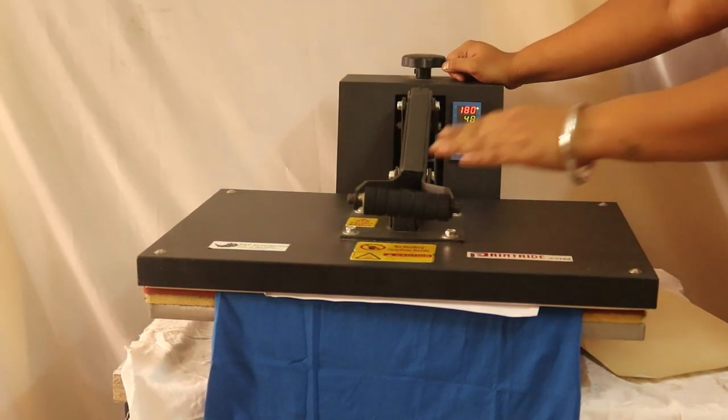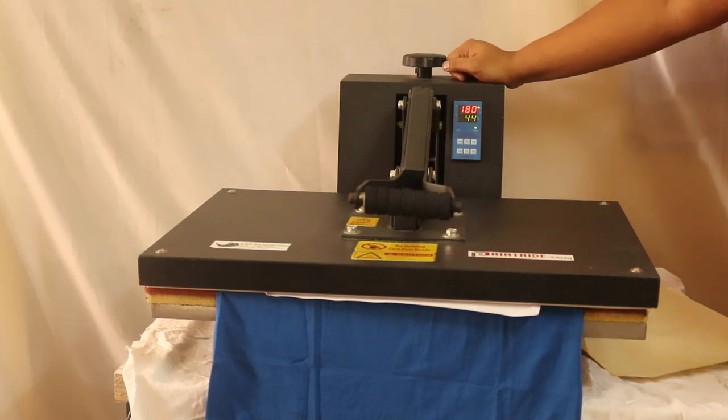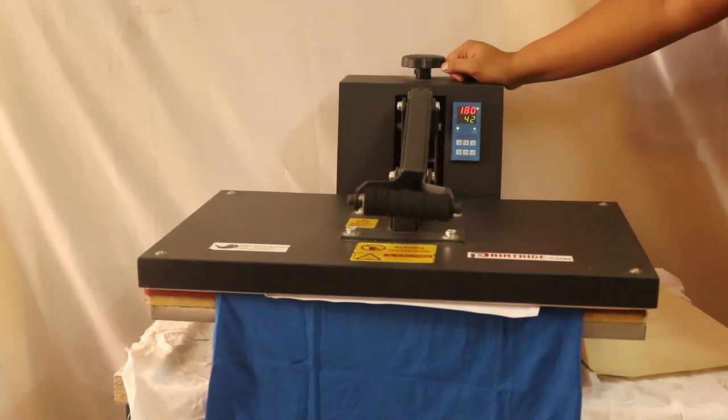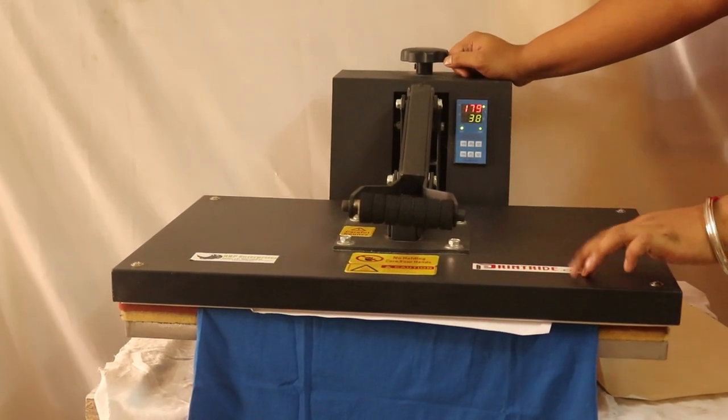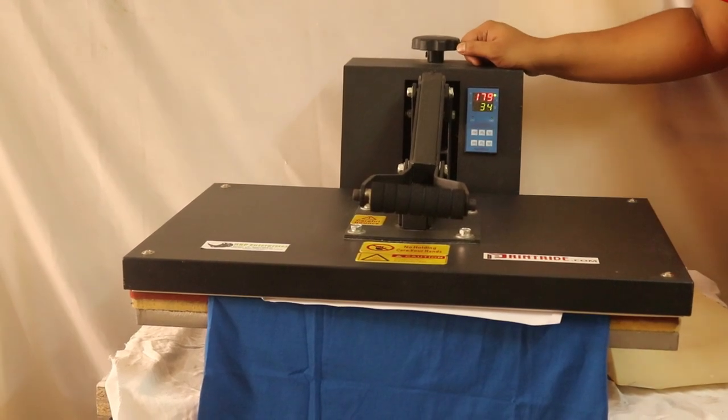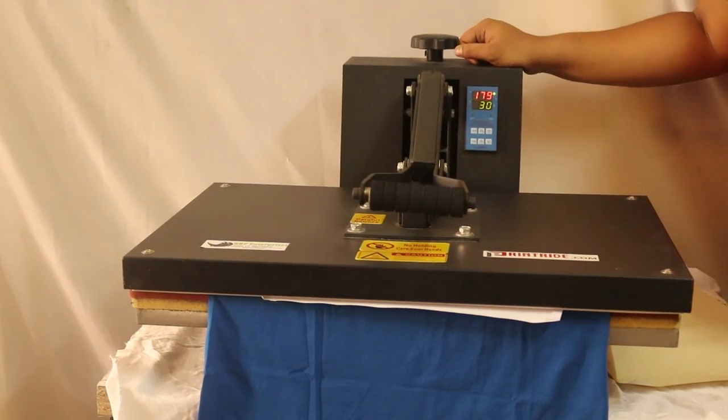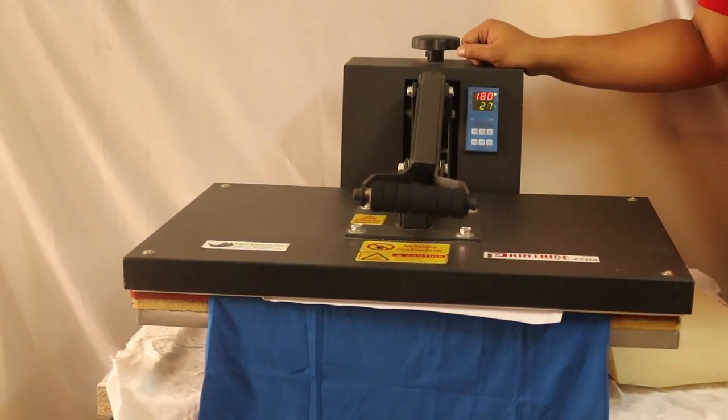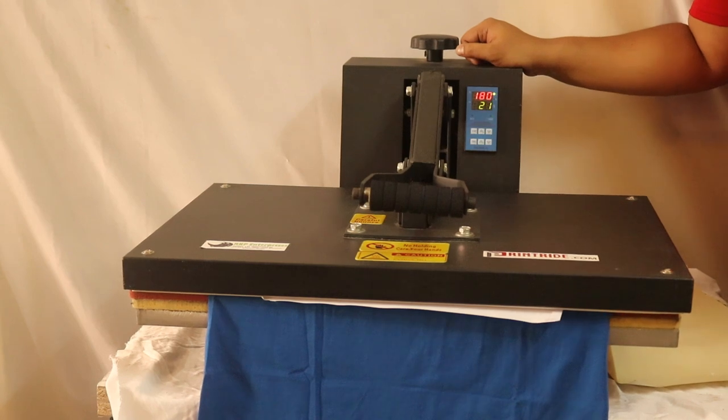But for more texture, suppose you want to get more matte finish look or if you want to get more glossy look, then how much time you will put the t-shirt more, that much more finishing you will get. 10 seconds is the average time. You can put it for 30 seconds, 40 seconds, 45 seconds, whatever you like.